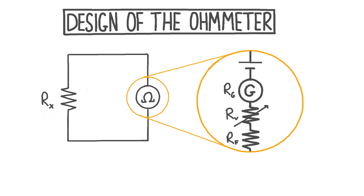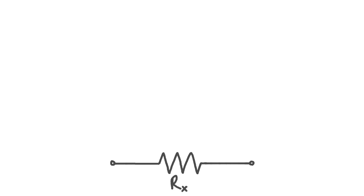In this video, we'll see how we can construct an ohmmeter using a cell, a galvanometer, a variable resistor, and a fixed resistor connected in series. To start things off, let's consider a resistor with some resistance Rx, and we want to build an ohmmeter so we can measure the value of Rx.